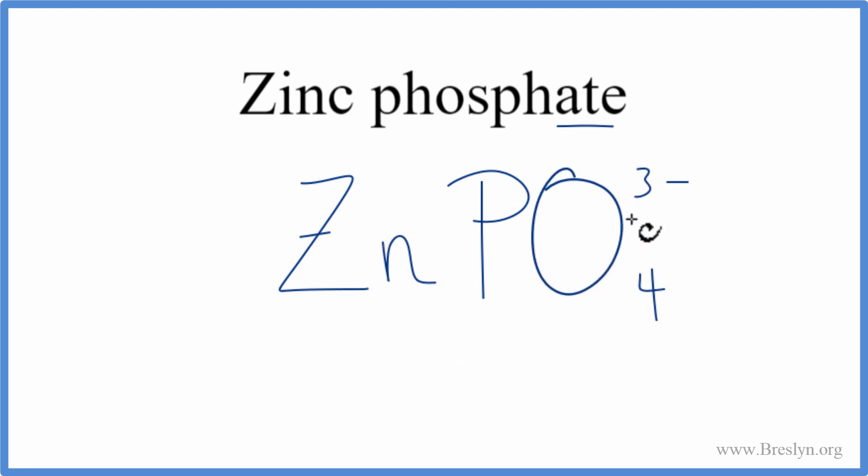Zinc's a metal. It's a transition metal. And then the phosphate, that's made up of non-metals. We have a metal and non-metals. We have an ionic compound.